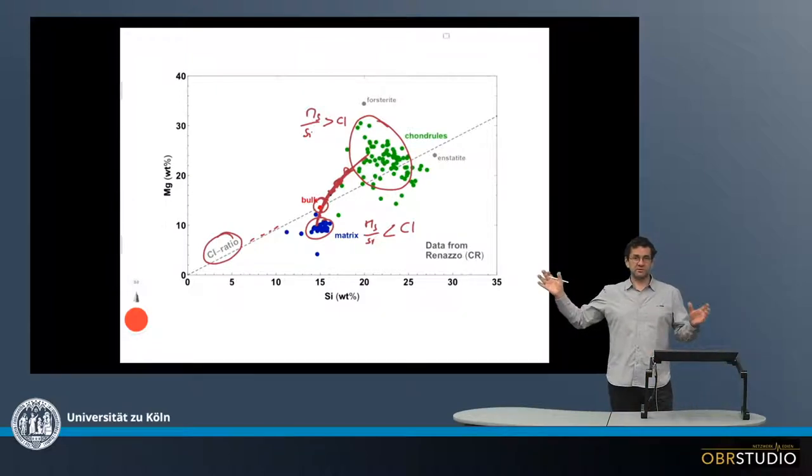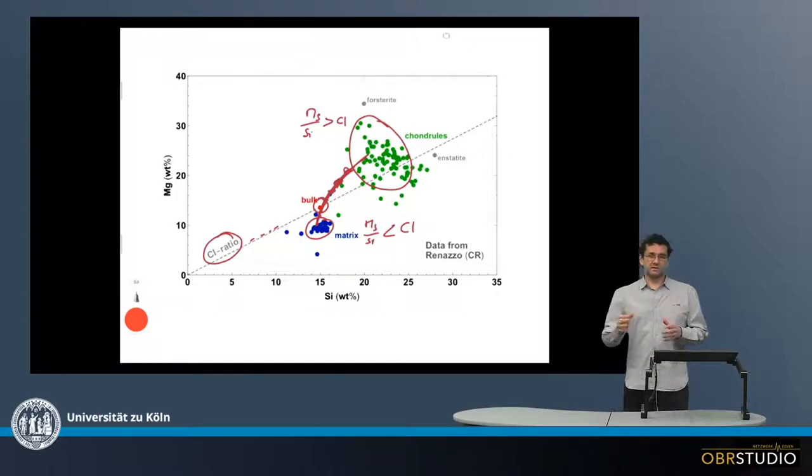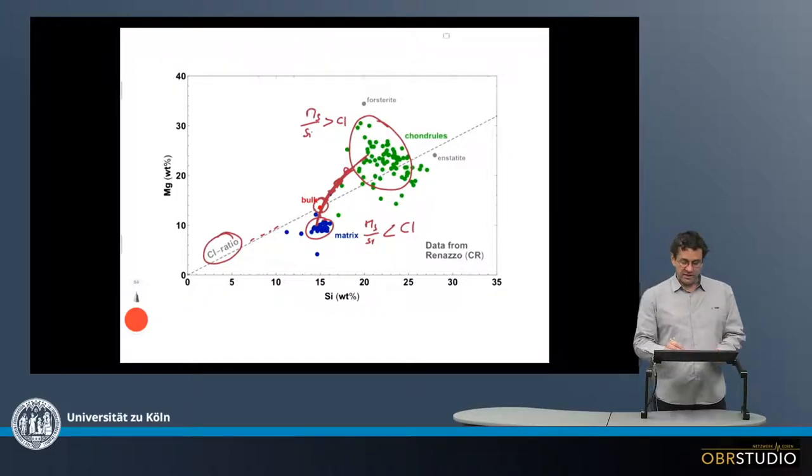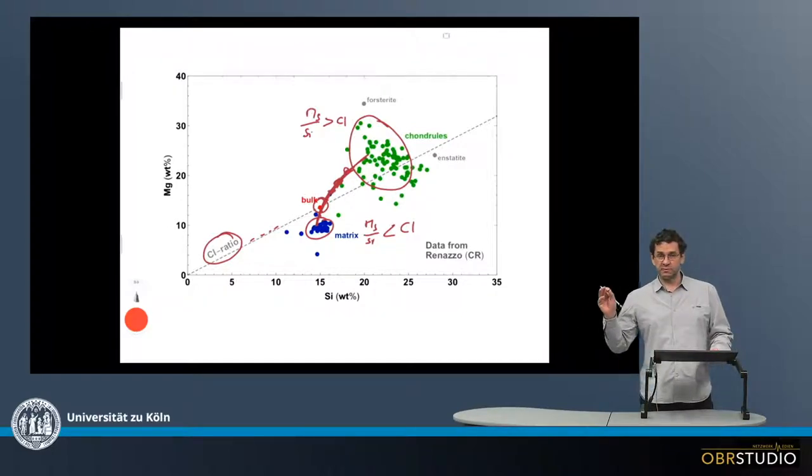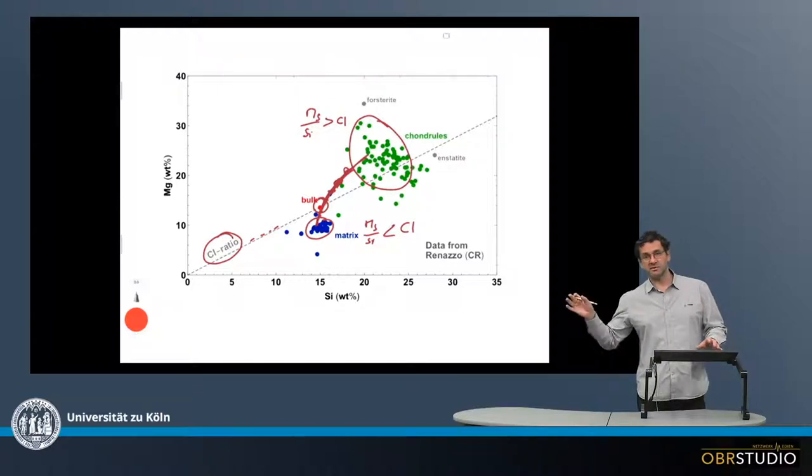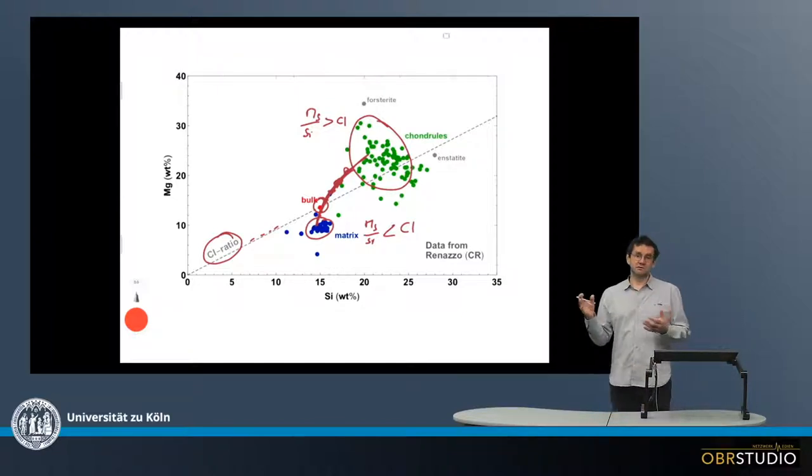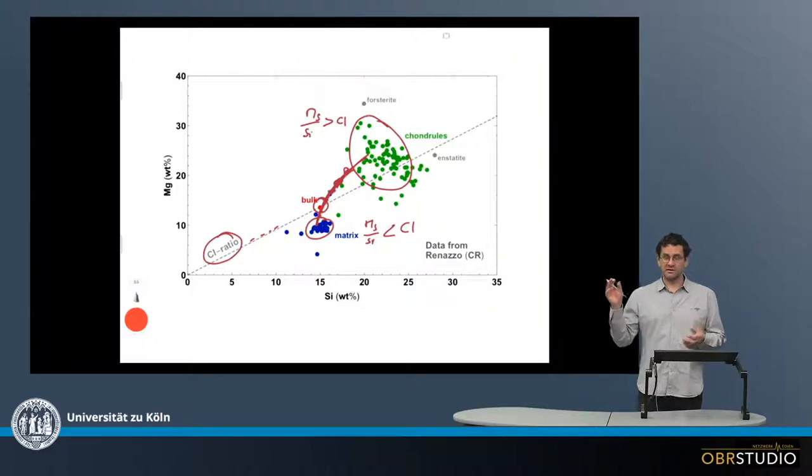If we mix them together, chondrules and matrix from two reservoirs, then the bulk should plot somewhere on the line, but not on a very specific point. But because we observe that the mixing line, or the bulk, plots on the intersection of the mixing line with the CI ratio on a very specific point, and not only for this very particular chondrite and element pair,